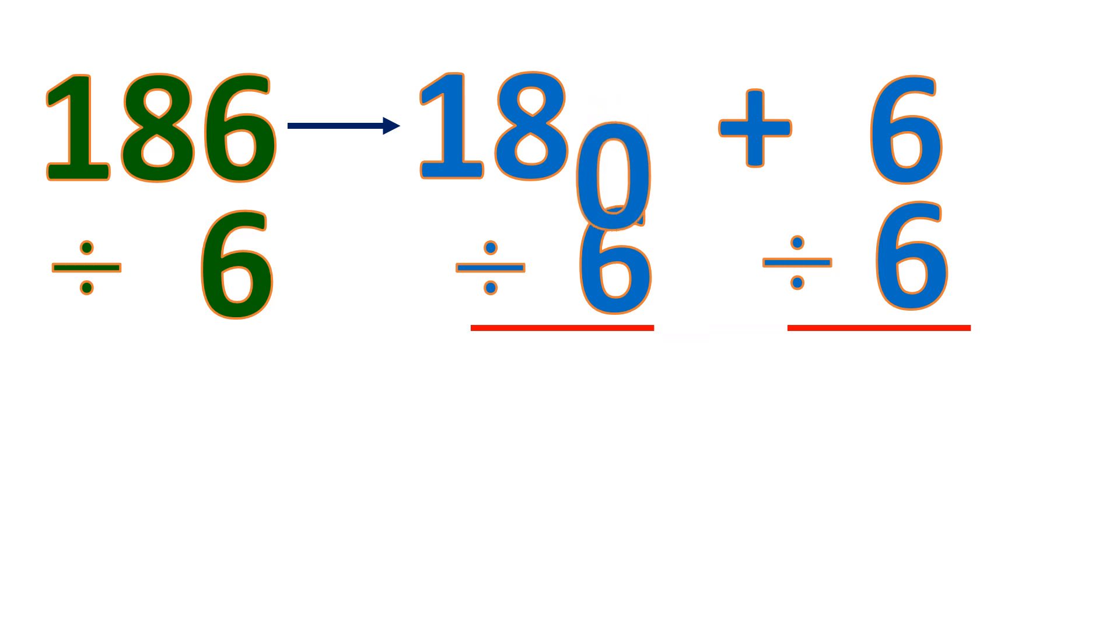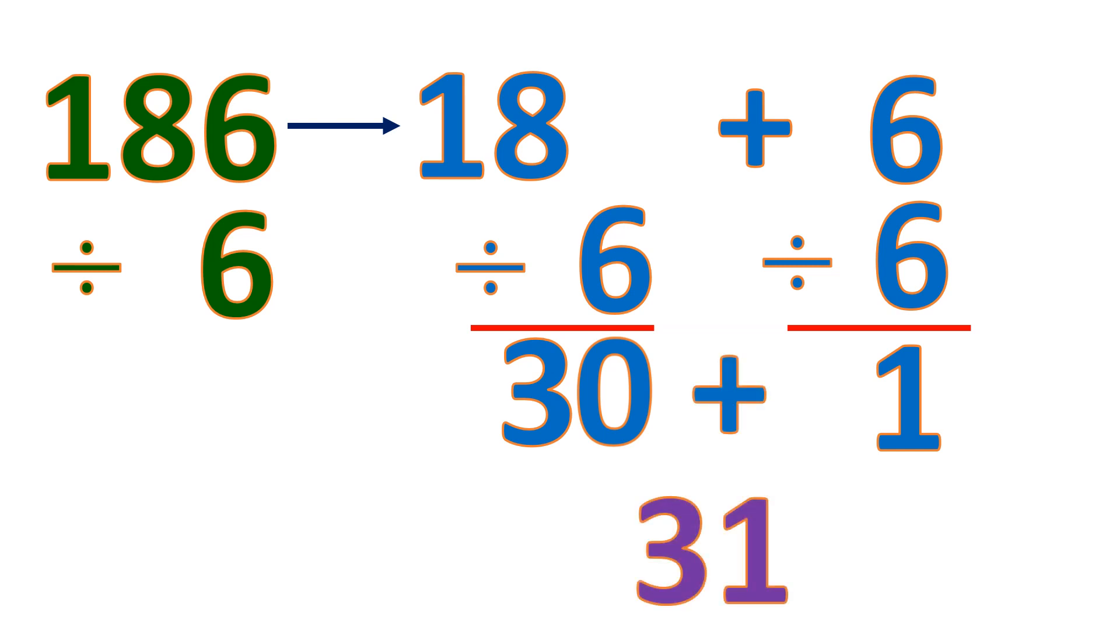We put down the 0 and divide the remaining. 18 divided by 6 is 3, so 180 divided by 6 is 30. Then we divide 6 by 6, it's 1. Then we add them. 30 plus 1 is 31. That means 186 divided by 6 is 31. This is quite easier to analyze in our mind compared to just simply dividing the whole thing by 6.